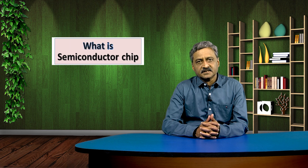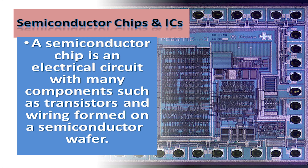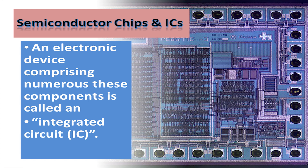Let us understand what is a semiconductor chip. Basically, it is an electrical circuit with many components such as transistors and wiring formed on a semiconductor wafer. An electronic device comprising numerous of these components is what we call an integrated circuit — we call it an IC or a chip.